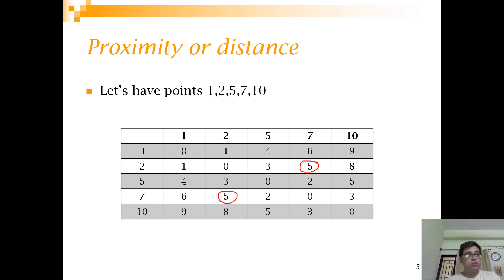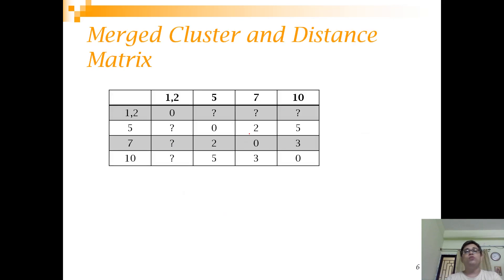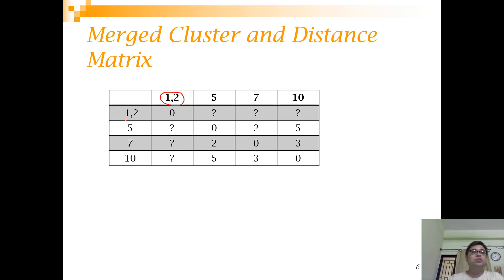The first step — computing the proximity matrix — is done. The next step is to find the closest points. Here the minimum distance is 1, so we merge those points. Once merged, the proximity matrix changes from a 5×5 to a 4×4 matrix, and one cluster now contains points 1 and 2. Now the question is: how do we calculate the distance of cluster {1, 2} with points 5, 7, and 10? Since there are two points in the cluster, which distance do we take? This question gives rise to different types of agglomerative clustering.